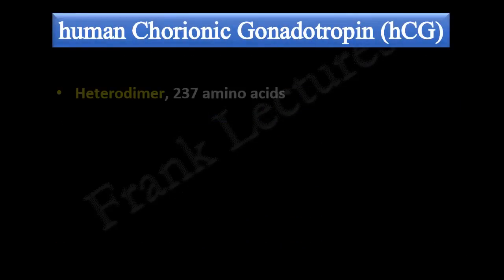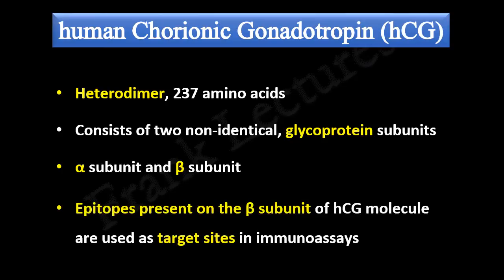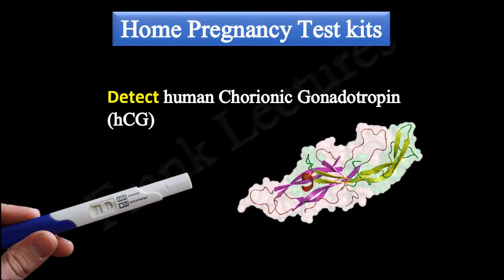HCG is a heterodimer made up of 237 amino acids. It consists of two non-identical glycoprotein subunits: the alpha subunit and the beta subunit. Epitopes present on the beta subunit of the HCG molecule are used as target sites in immunoassays. So, pregnancy test strips detect the presence or absence of these HCG molecules.